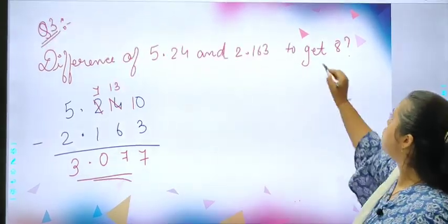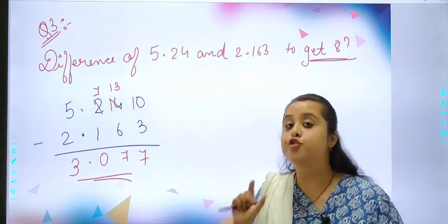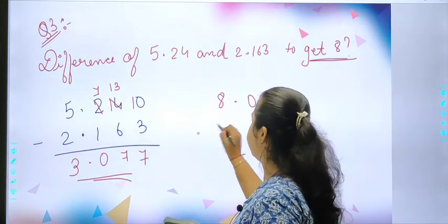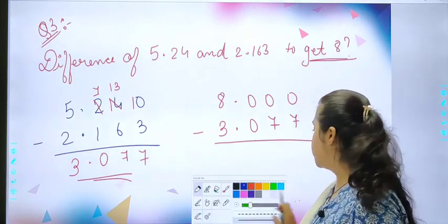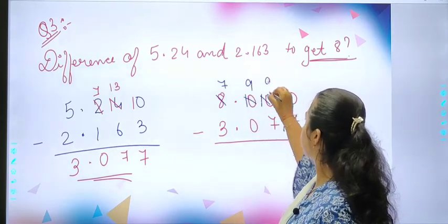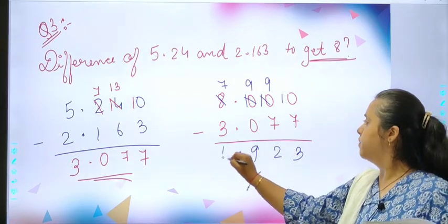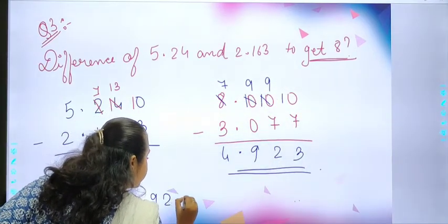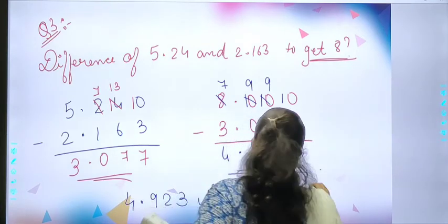Now we are supposed to get 8. That means from this number, 8 minus correctly, of which the answer we will be adding. So 8.000 minus 3.077. Let's do the subtraction. This 8 will become 7, 9, 9, and 10. 10 minus 7 is 3, then 2, 9, 4. Done. So what you will be adding? You will be adding 4.923. Alright? Done students? Easy.